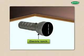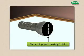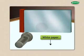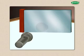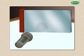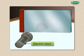Take a simple electric torch and stick a piece of paper having three slits over the glass of the torch. Spread a sheet of white paper on a drawing board. On one side of the board, place a flat or plain mirror upright. Now place the torch on the board obliquely in front of the mirror, at a distance of about 45 centimeters from it.